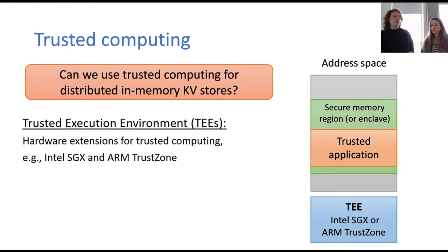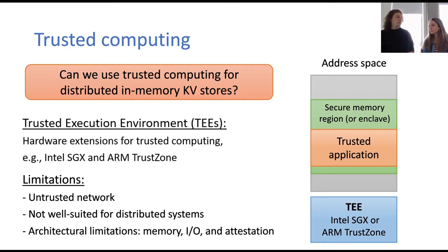Examples for these systems are Intel SGX, TrustZone, and AMD SEV. However, these systems come with severe limitations like limited memory, slow I/O, and slow attestation. Furthermore, the trust doesn't extend over the network, which makes them not very suited for distributed systems.